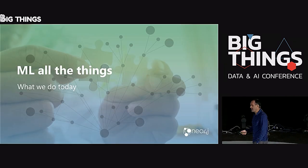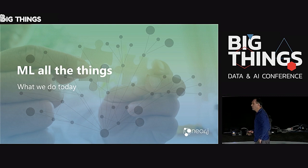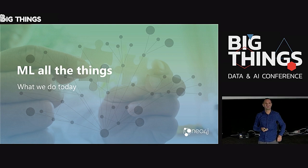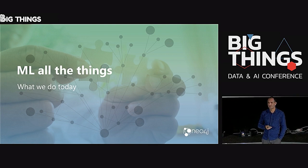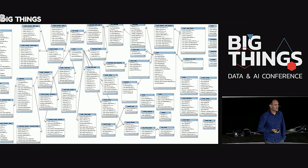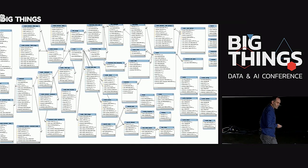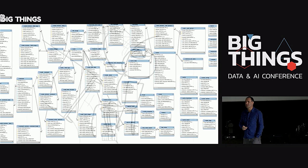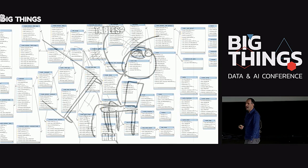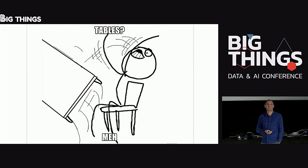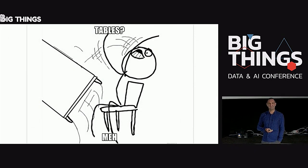So what do we do today in ML? Like literally five people at a conference that's AI-centric are actually doing ML. What do we do today? We take tables, laboriously extract features from them, and ram them through our ML pipelines. But I'm a graph person. I think we can do better.